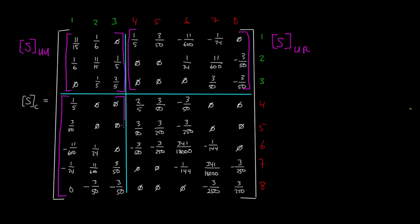And then down here, this matrix is going to be called S sub RU. Restrained rows (4, 5, 6, 7, 8) and unrestrained columns (1, 2, 3).